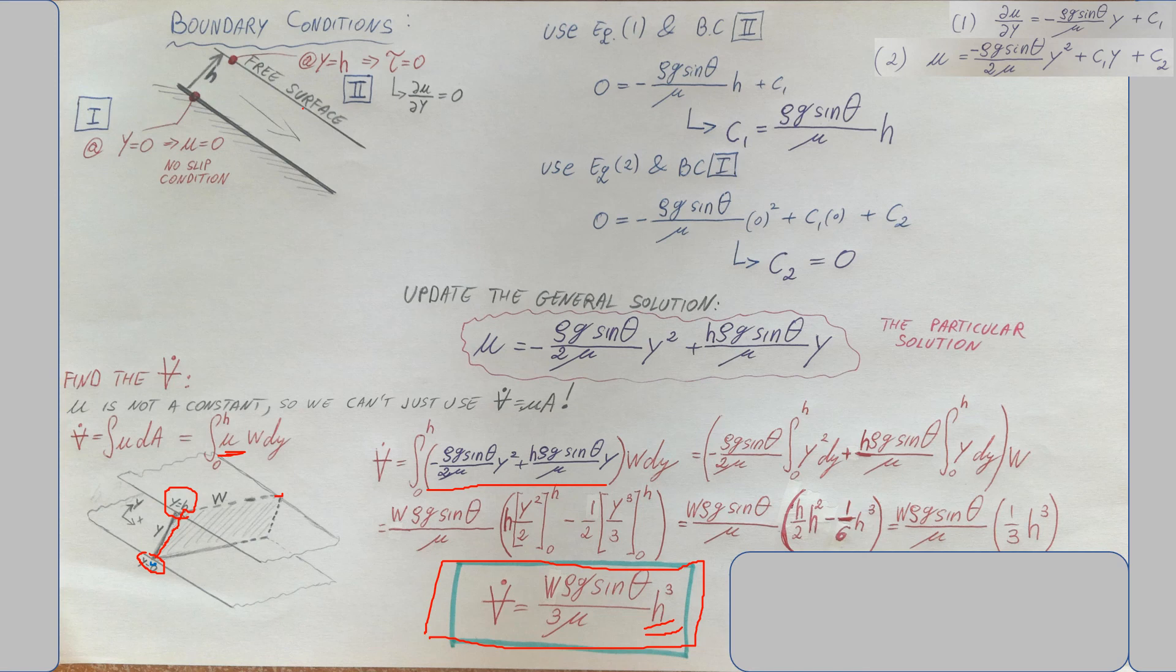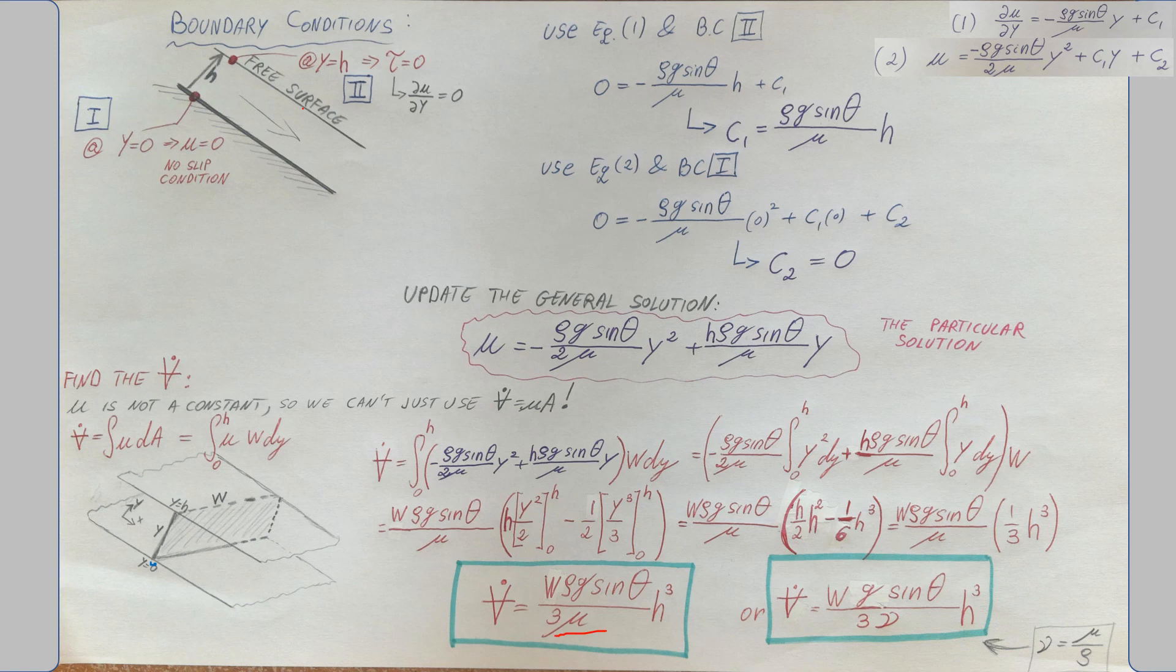Okay, now if you didn't change to dynamic viscosity and you left it in kinematic viscosity due to this formula right here, right? Then this, you could write the answer this way, where you will not have density and you will not have dynamic viscosity, you will just have kinematic viscosity. Both is perfectly fine. It doesn't change absolutely anything.